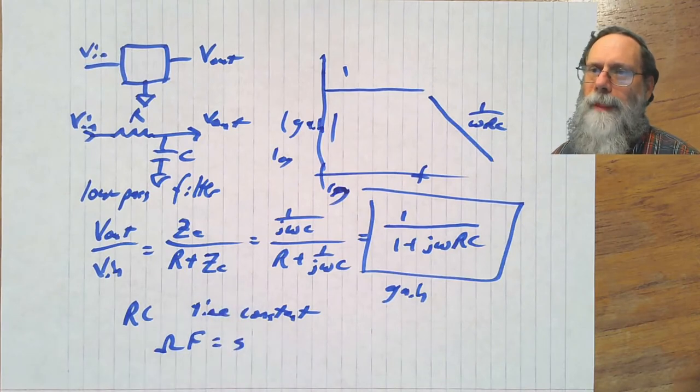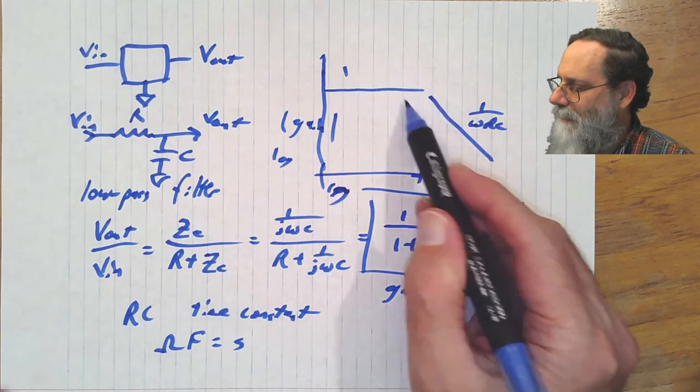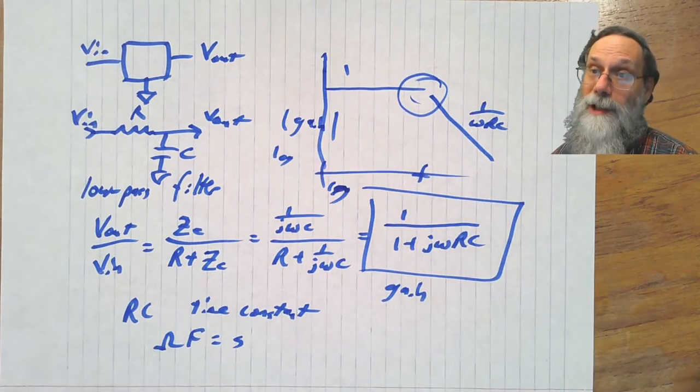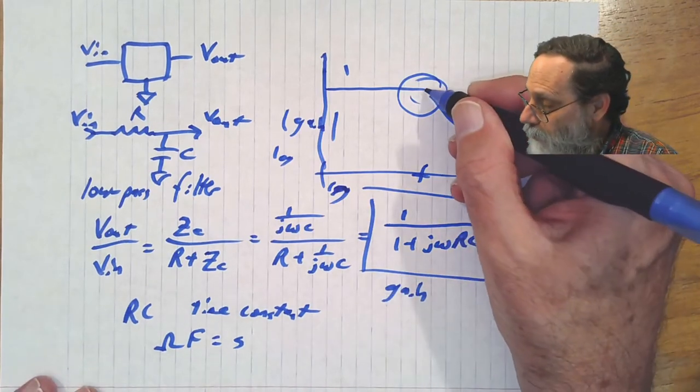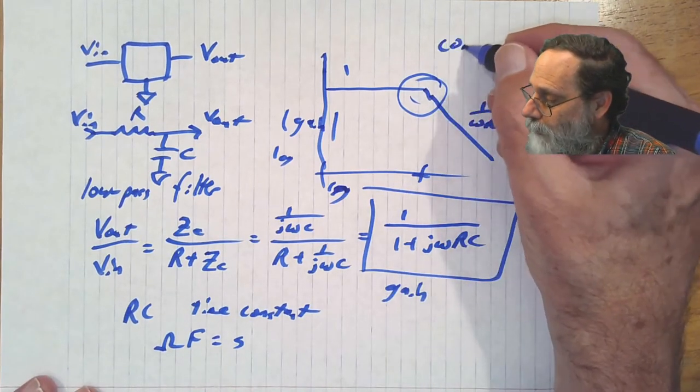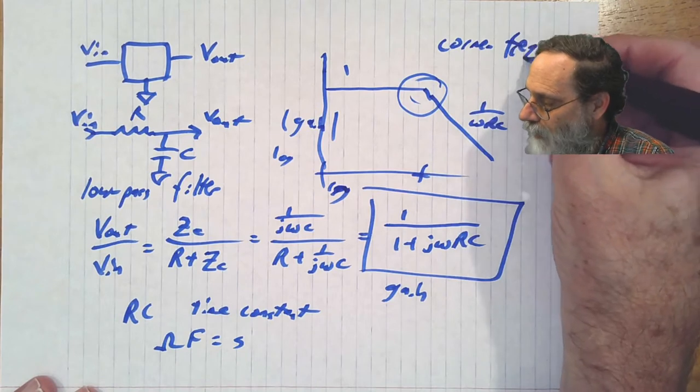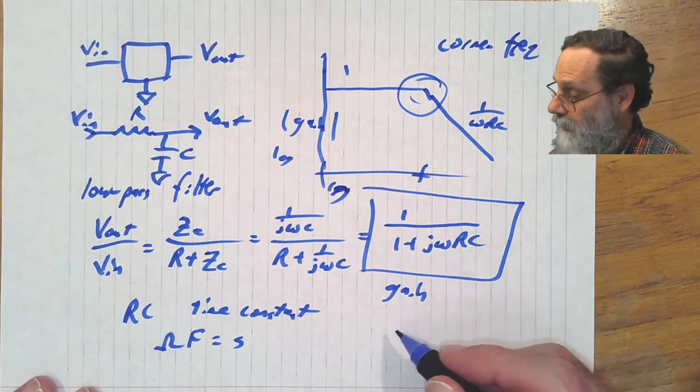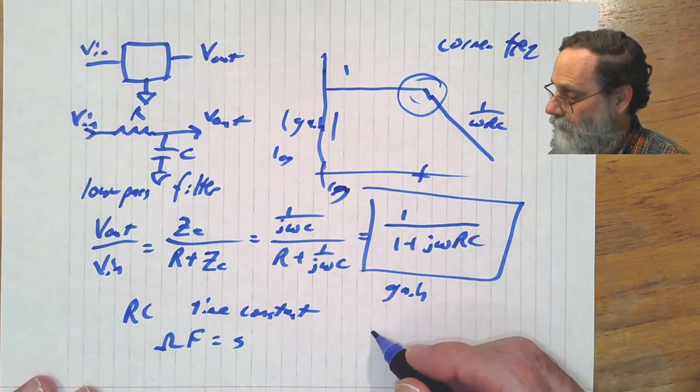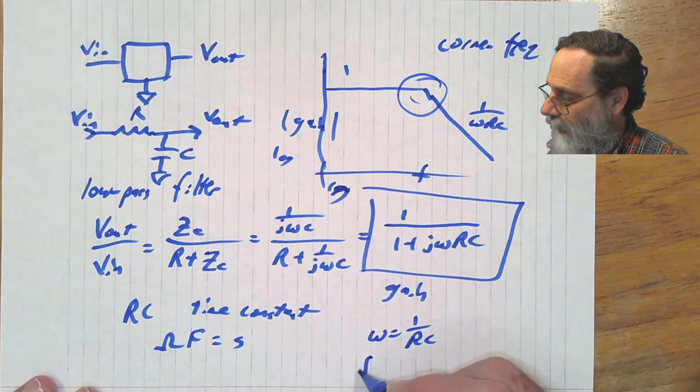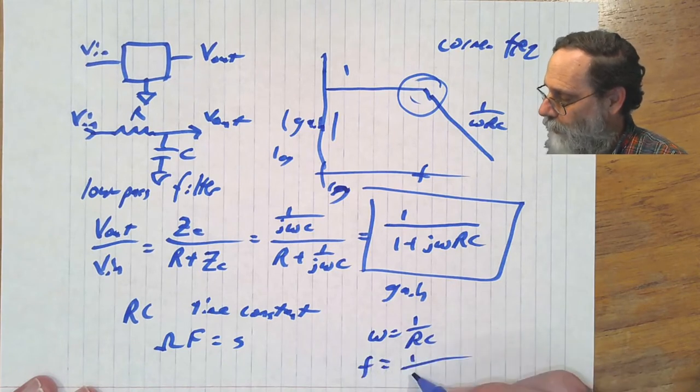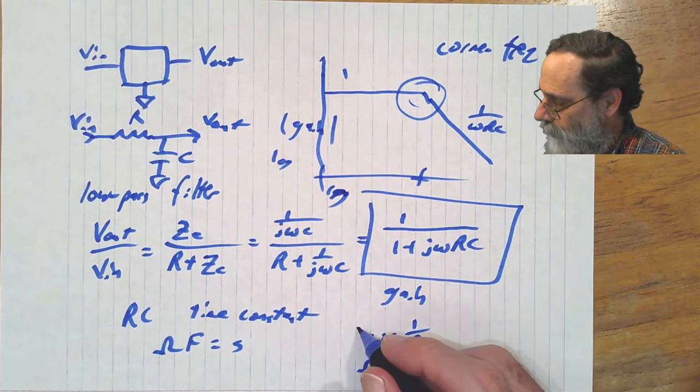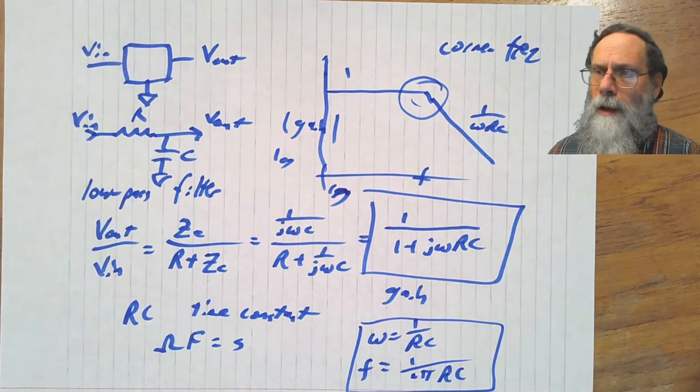Okay. Things get a little bit tricky sort of in this range where those two lines would come together. Incidentally, where those lines would meet is called the corner frequency. And the corner frequency is when omega is equal to 1 over RC, or frequency is 1 over 2πRC. That's the corner frequency.